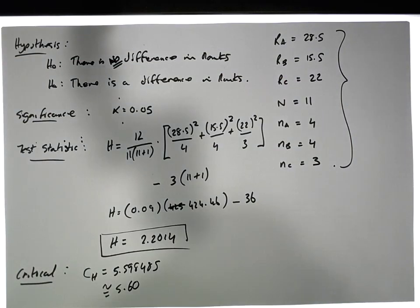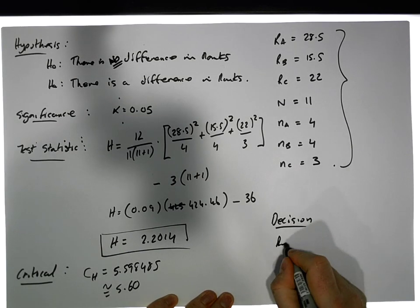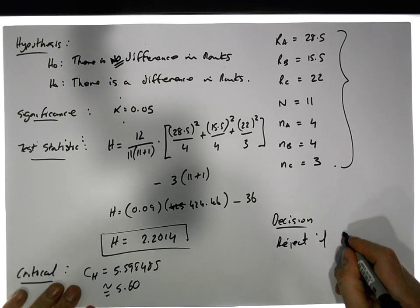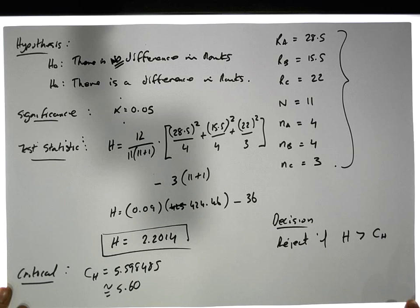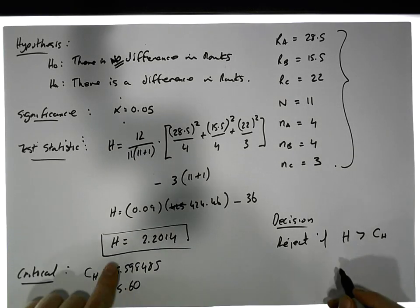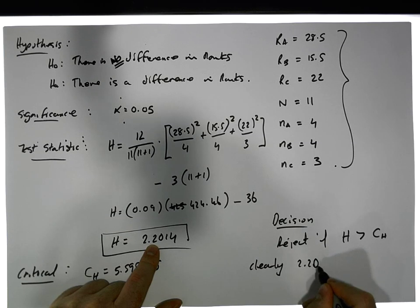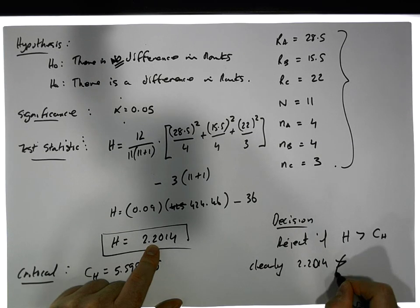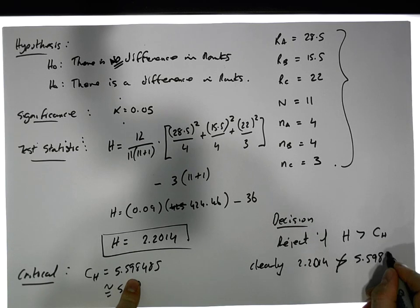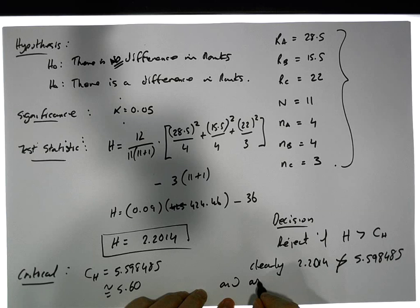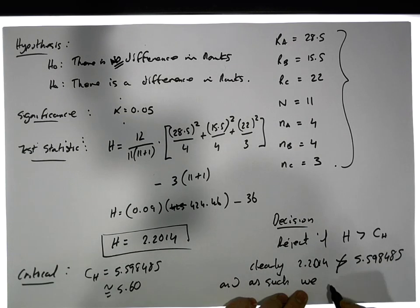So that's our critical value, and our decision is we reject if the H statistic, the test statistic, is bigger than the critical value. Clearly, 2.2014 is not bigger than 5.598485, and as such we fail to reject H₀.